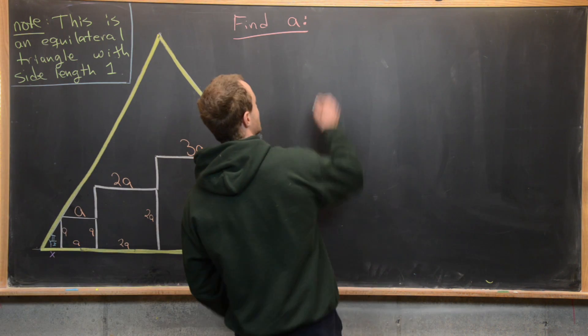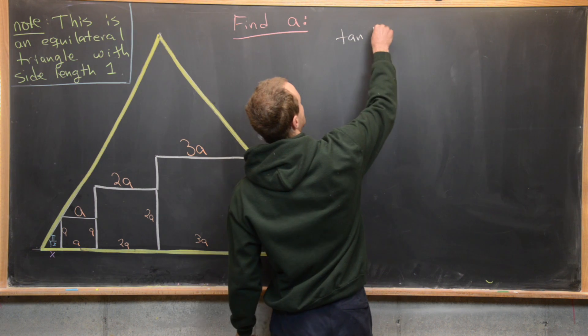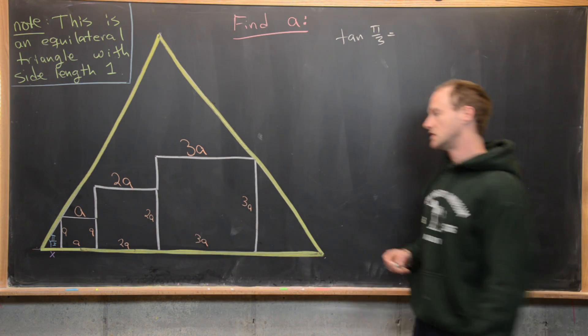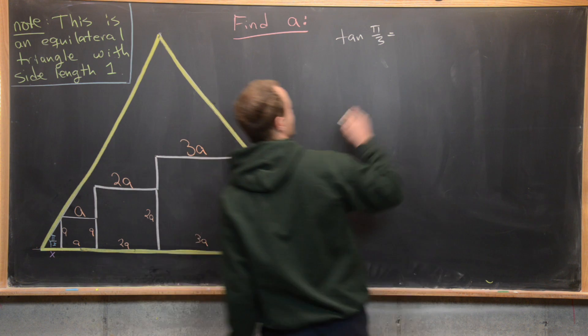So let's recall up here that tangent of pi over 3, so that's going to be opposite over adjacent, so that's going to be a divided by x.